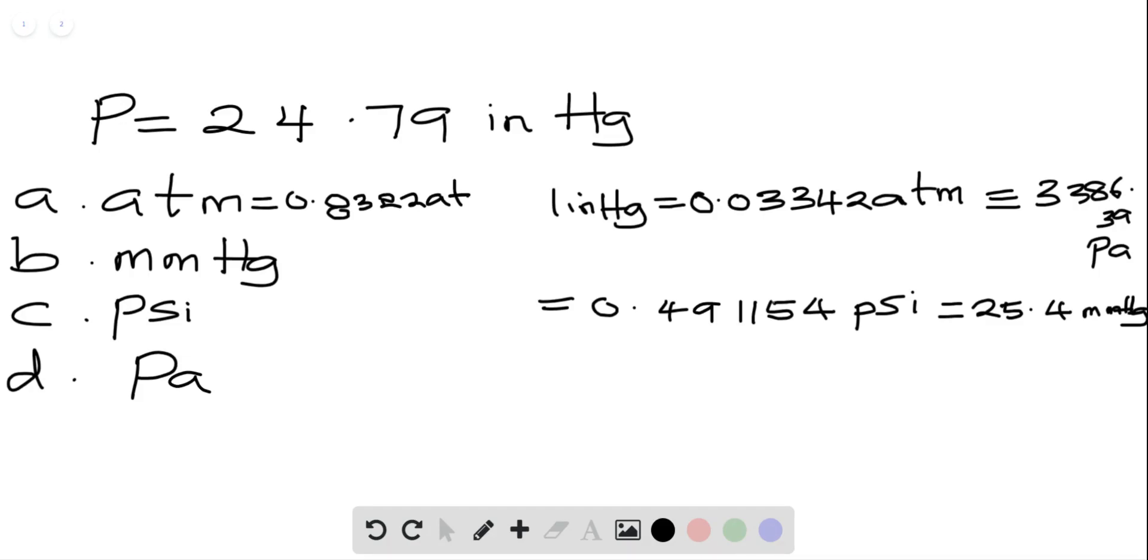In millimeter mercury, the answer will be 632.48. In psi, the answer will be 12.23, and in pascal, the answer will be 8.43 times 10 to the 4.